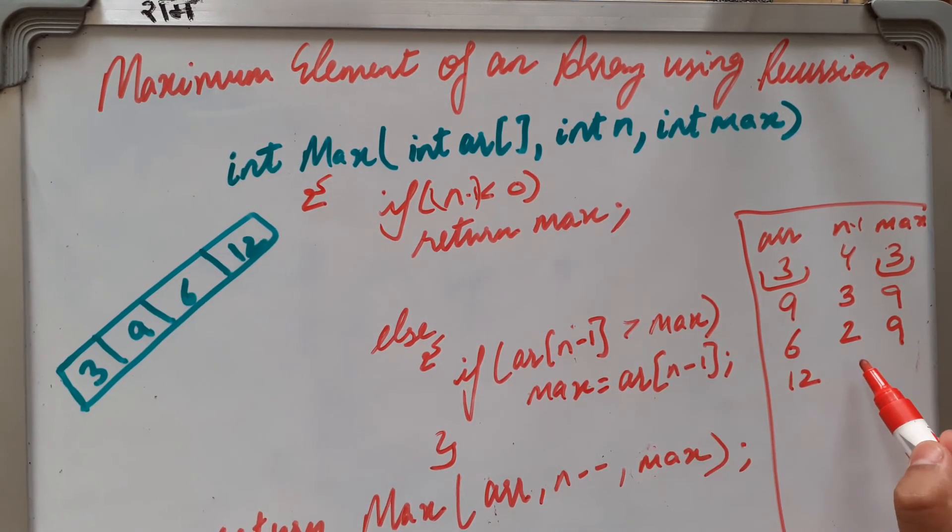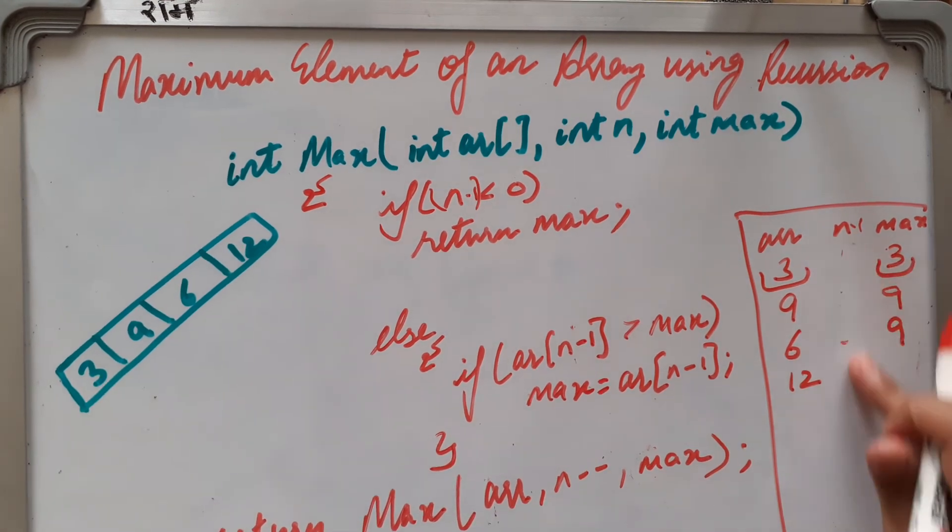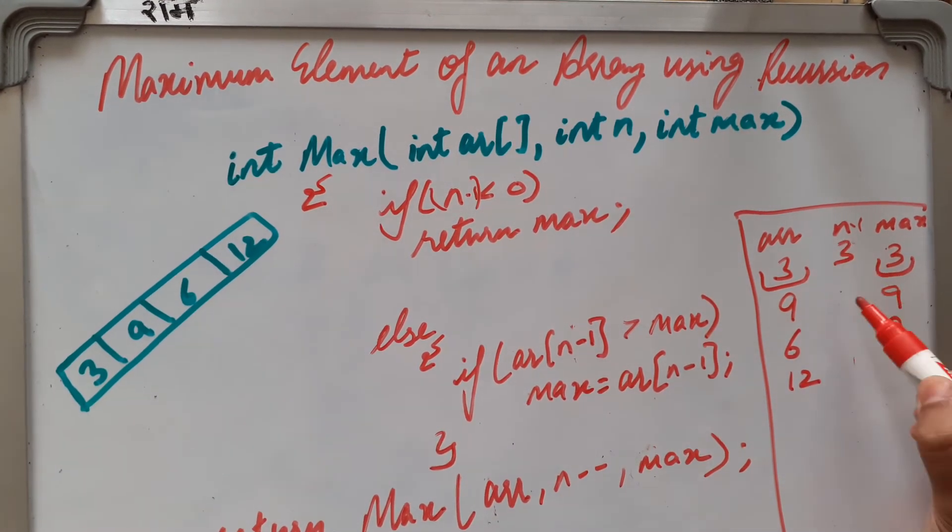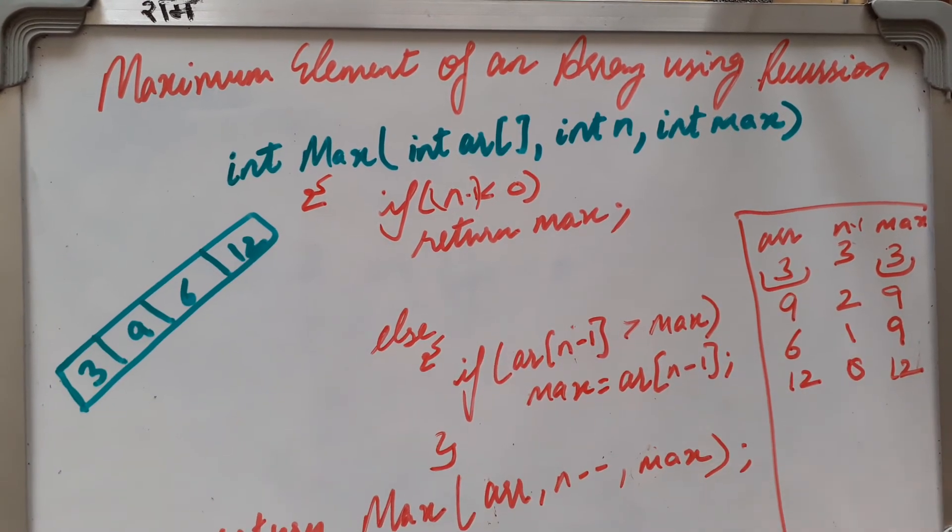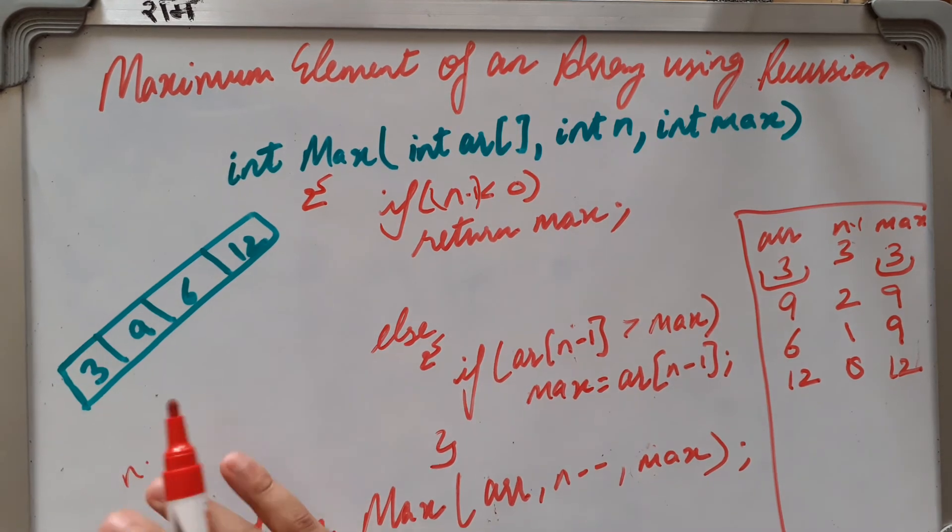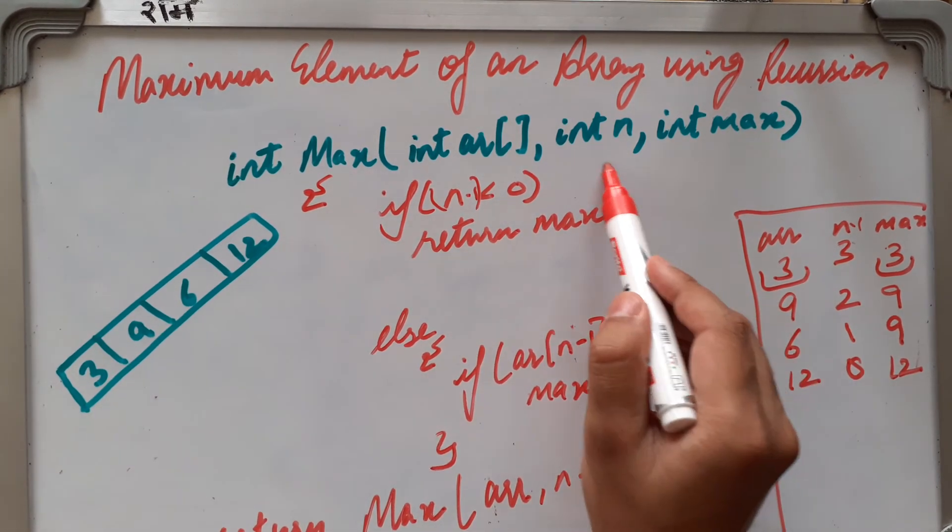Oh, it is having 4 elements, I have taken for 5 elements, sorry guys. So 2, 1, 0. When you are having 12, the max is 12. When n minus 1, n is 0, now it is minus 1. Minus 1 is less than 0, then it will return max.